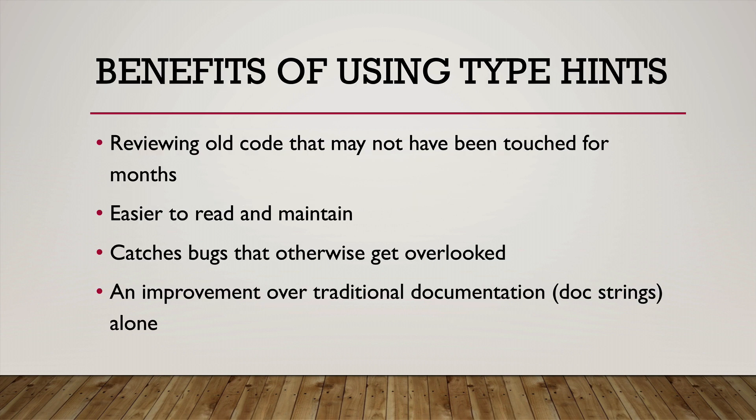There are several benefits of using type hints. For one, reviewing code that you haven't touched in a long time — if it's something that's fairly complex, it might be easier to read if you use type hints. You'll know what types of data to send different functions, and you'll also know what type of data you're getting back and whether it could be optional, something like a list or none as your data type being returned. So it's just easier to read and maintain.